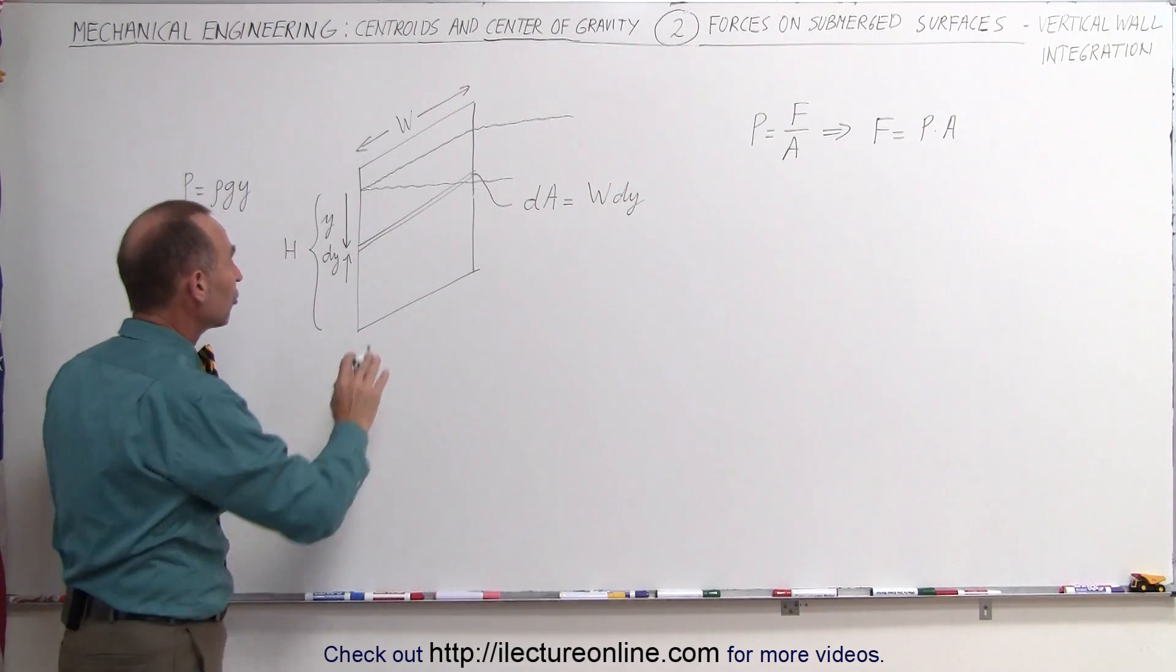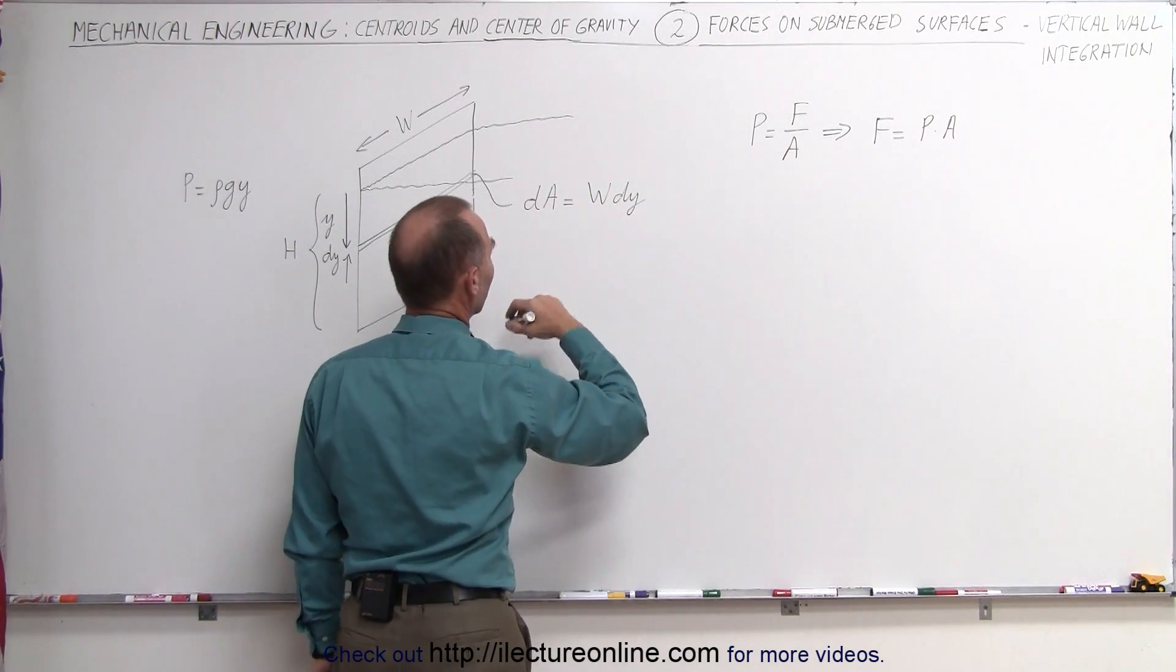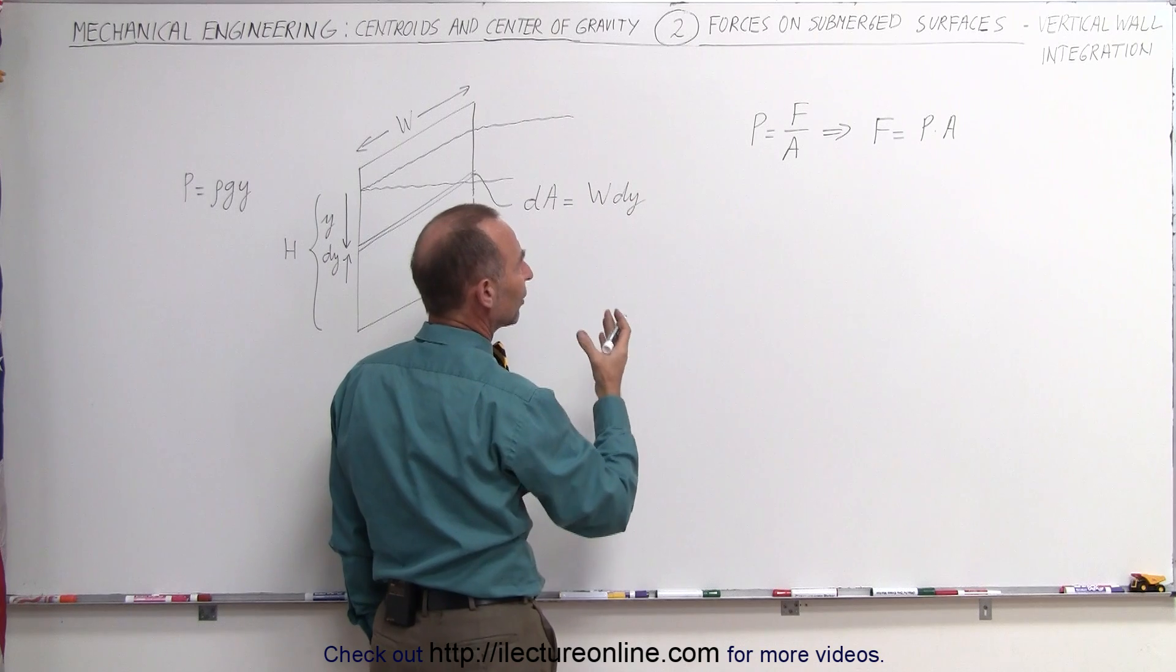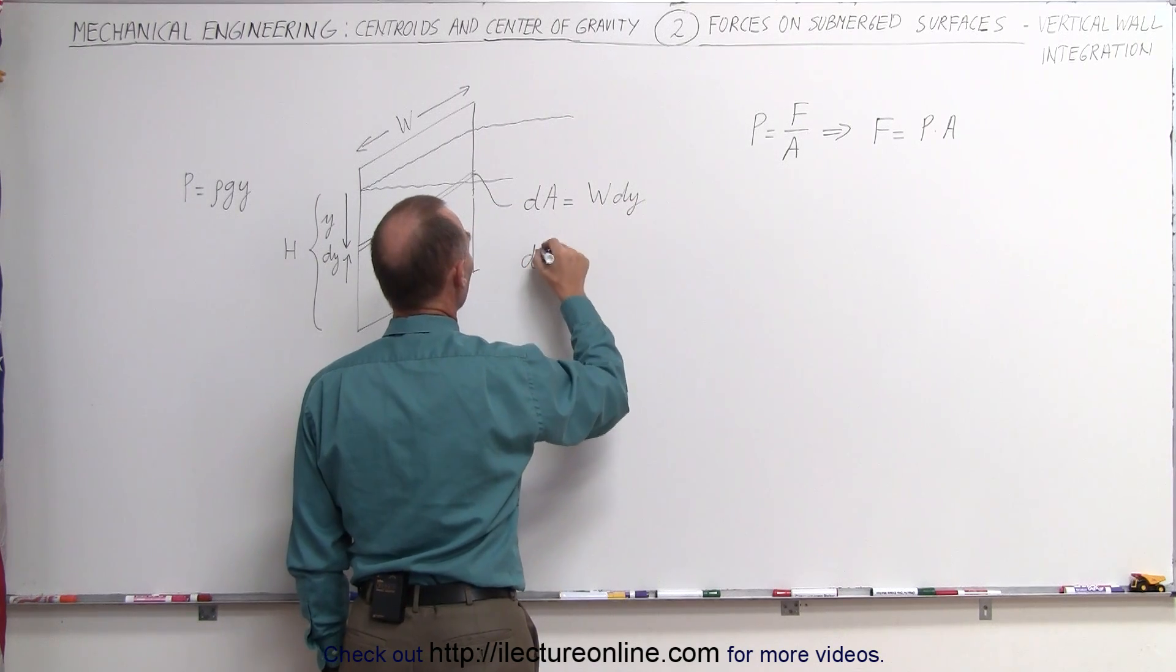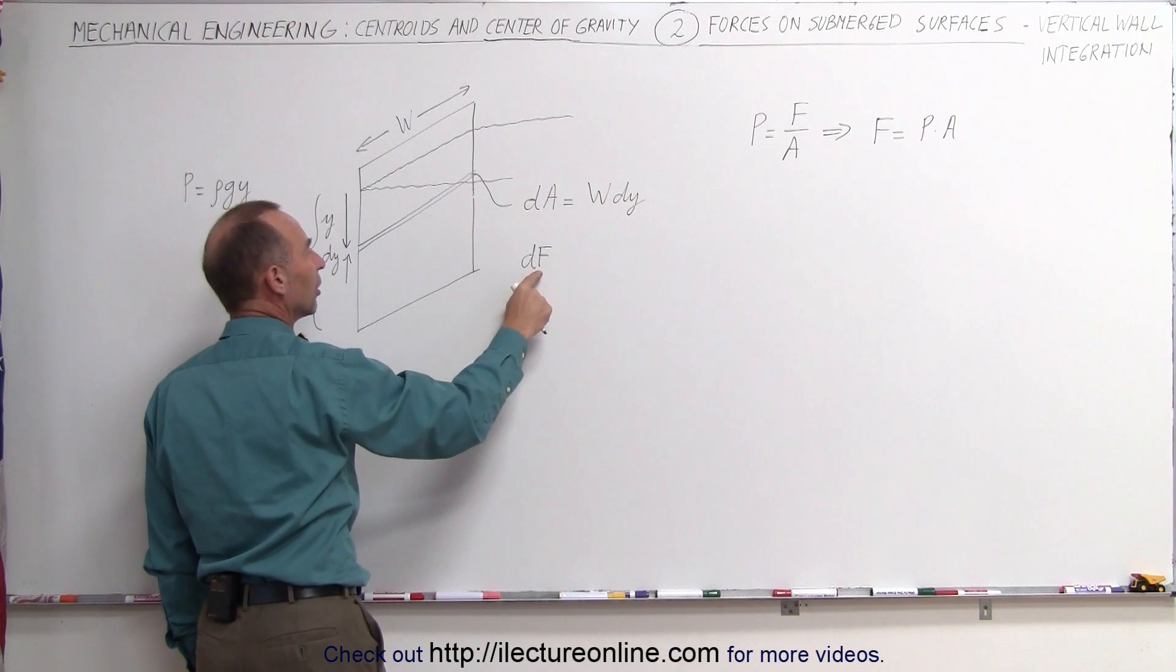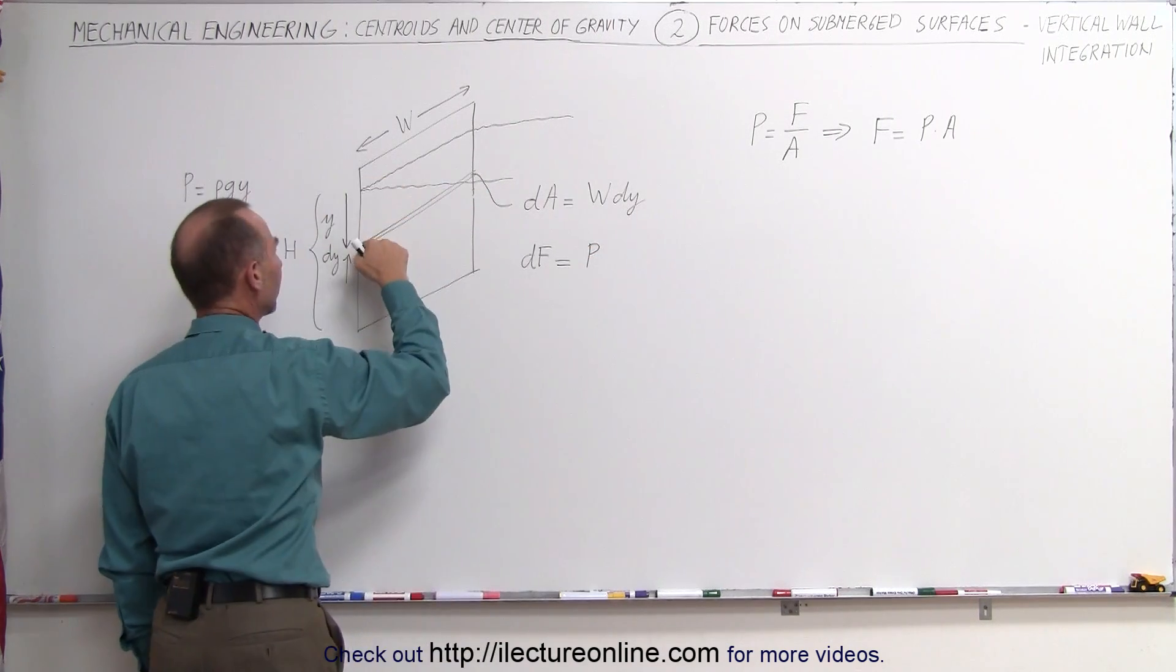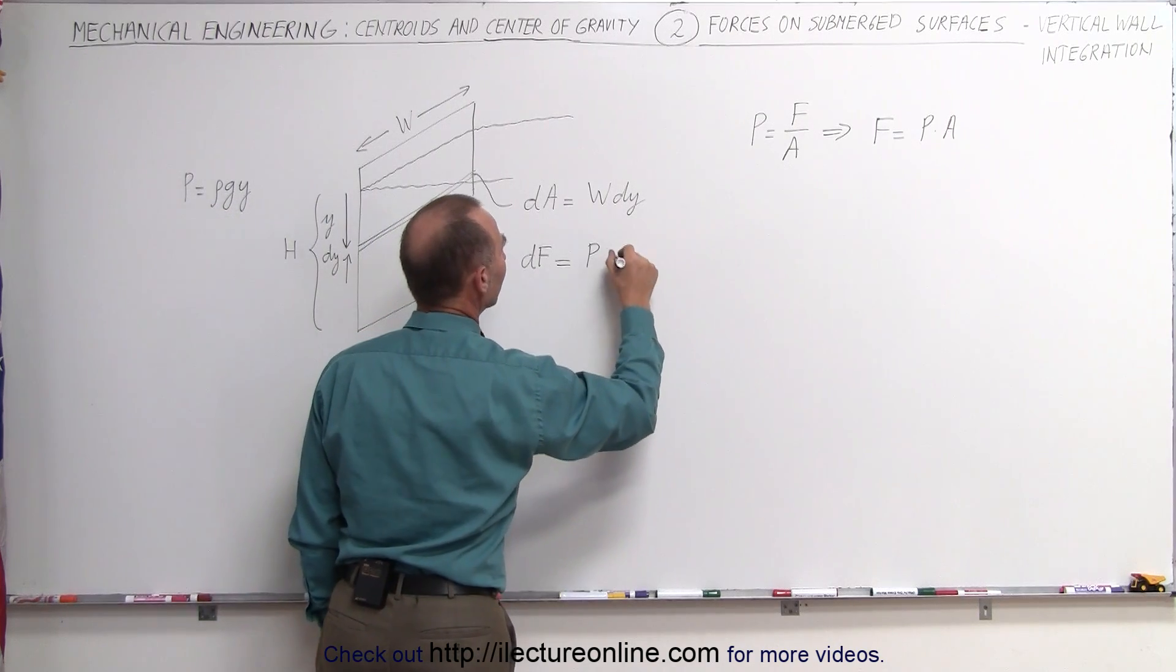Now we can find the pressure on that small little strip. We can say from that equation, or I shouldn't say the pressure, but I should say the force, we can call it a small dF, the force on this small little strip on the wall. Let's call that a dF, that is equal to the pressure at this particular depth, times the area which is a dA.